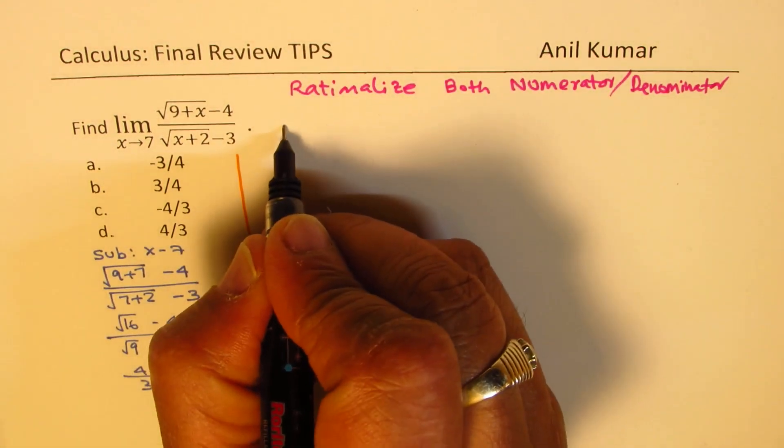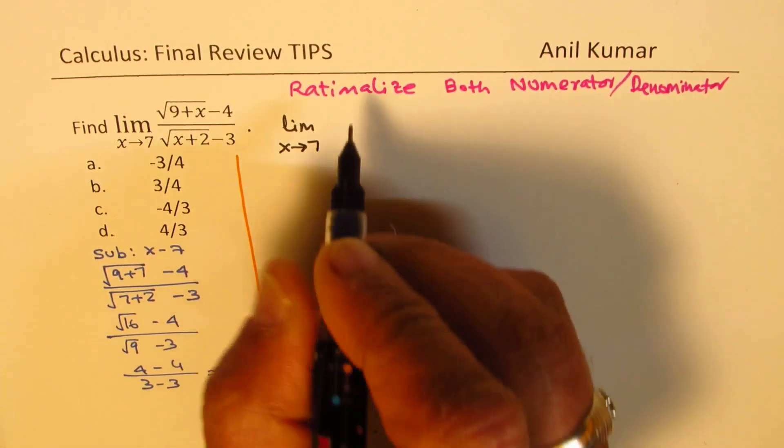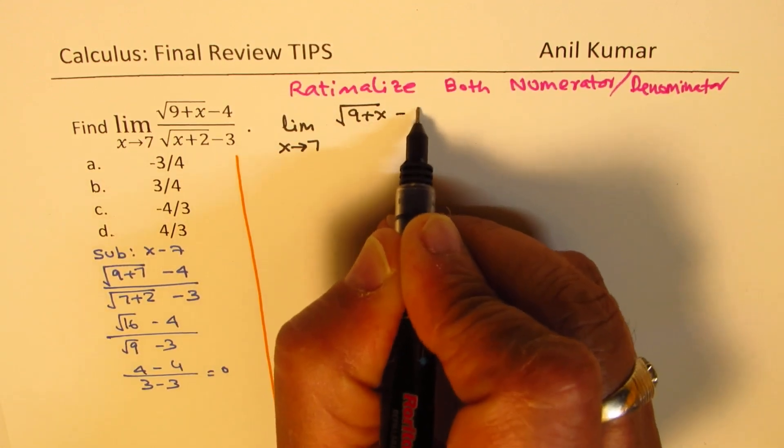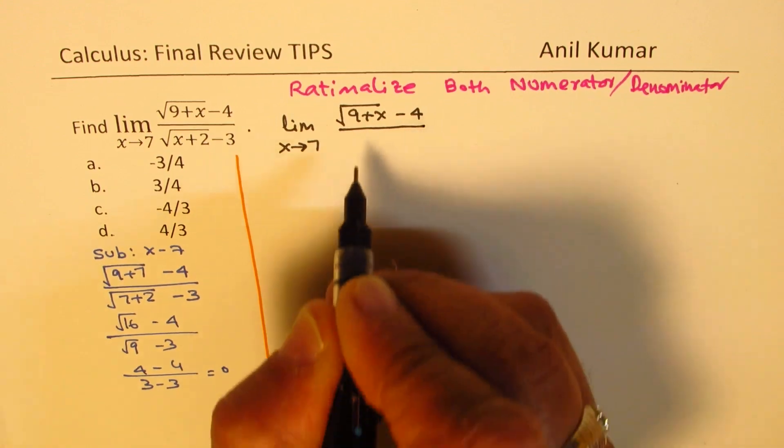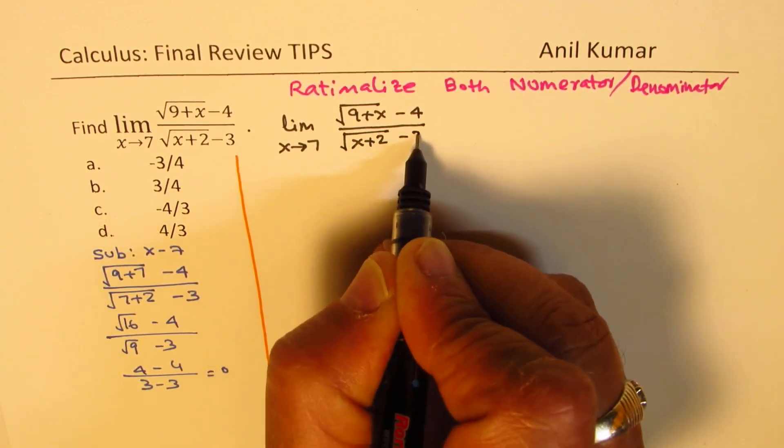So the question here is limit x approaches 7 of square root of 9 plus x minus 4 over square root of x plus 2 minus 3.